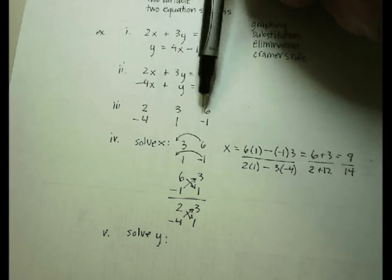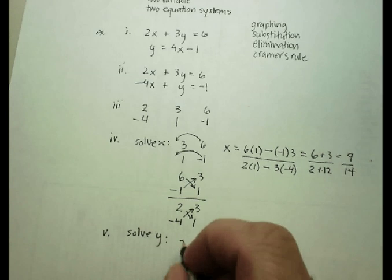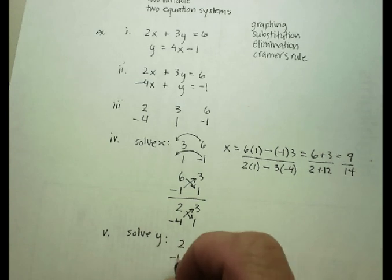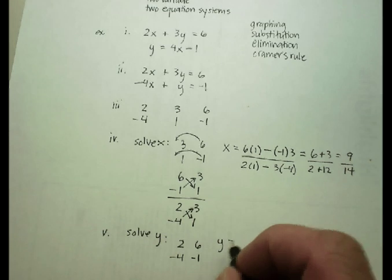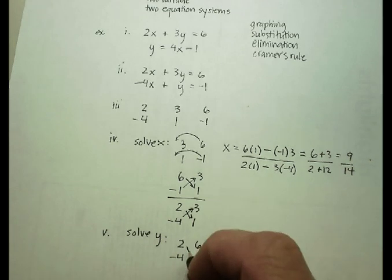2 and 6, negative 4, 1. Now with this one, I don't have to do any jumping. I can just go ahead and start criss-crossing.